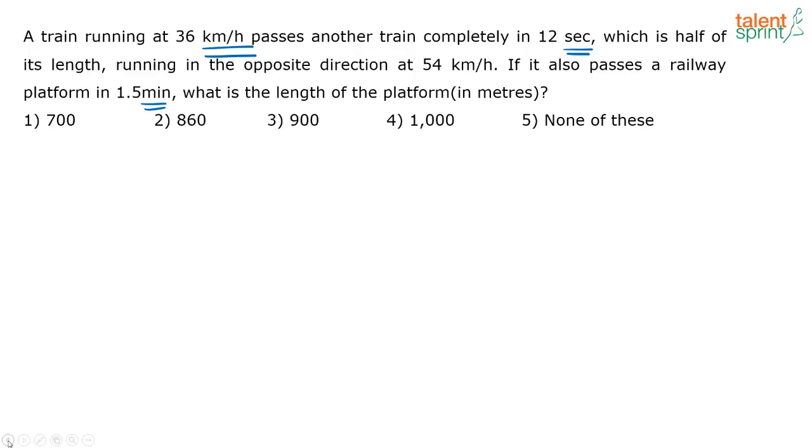So how do you go about solving this? See, there are two trains going in opposite direction. Let us assume that the first train is of length L. The second train is half the length of the first train. So I can say the length of the second train is 0.5 L.